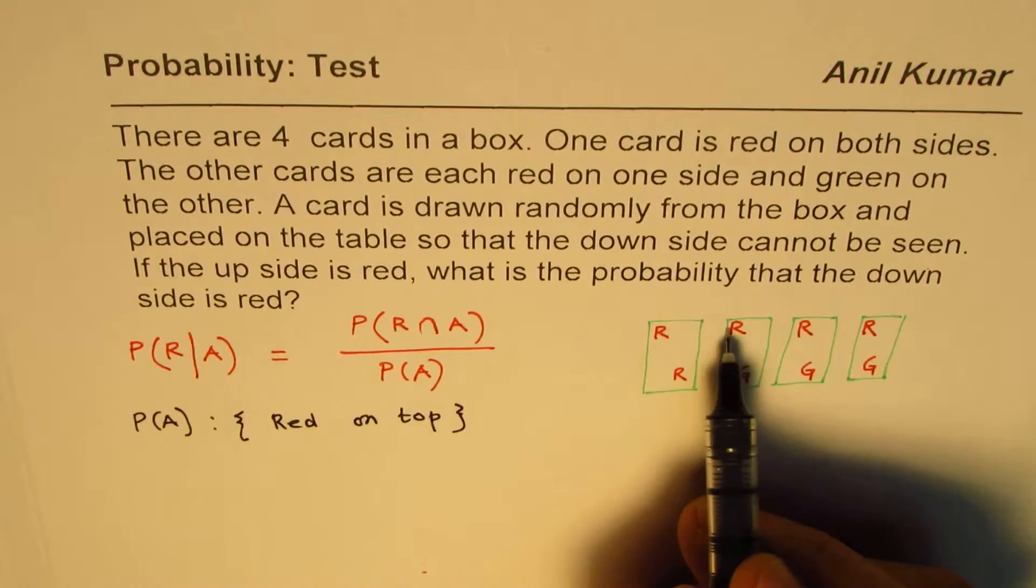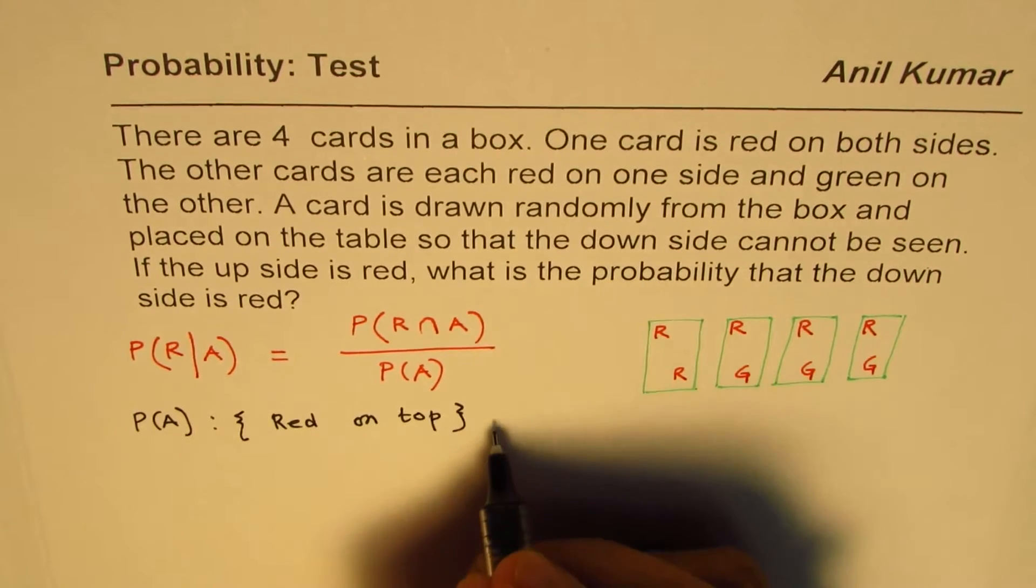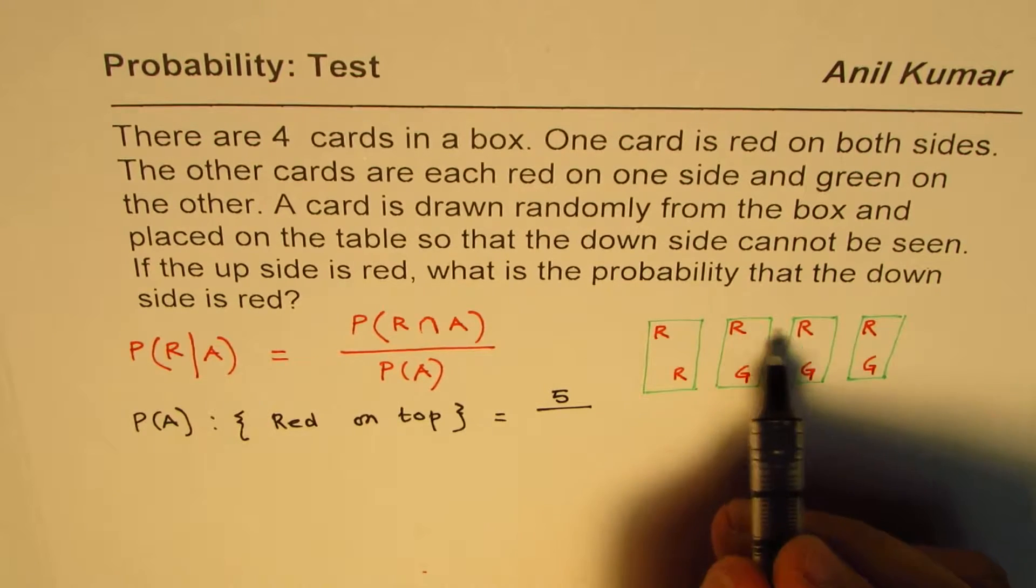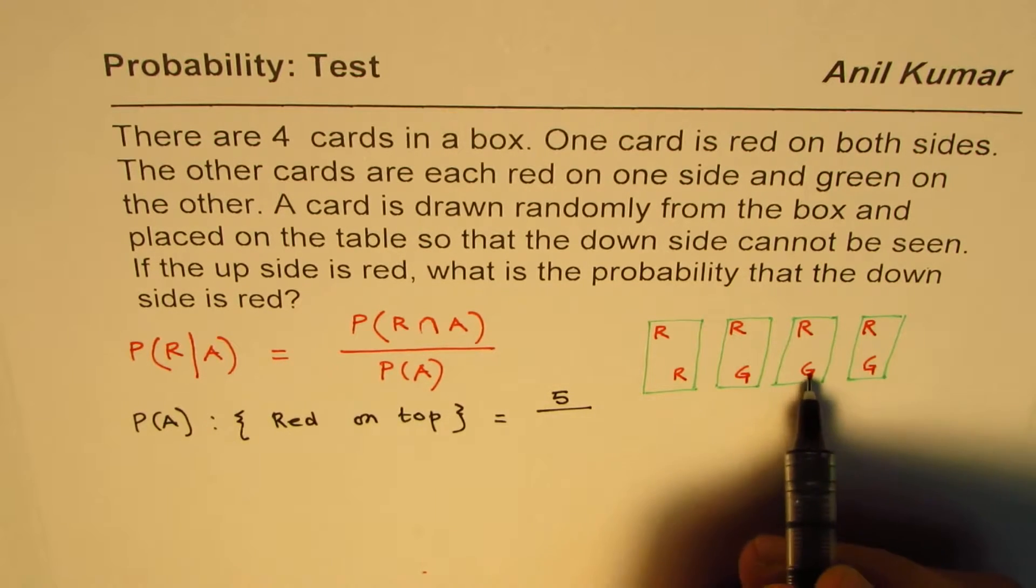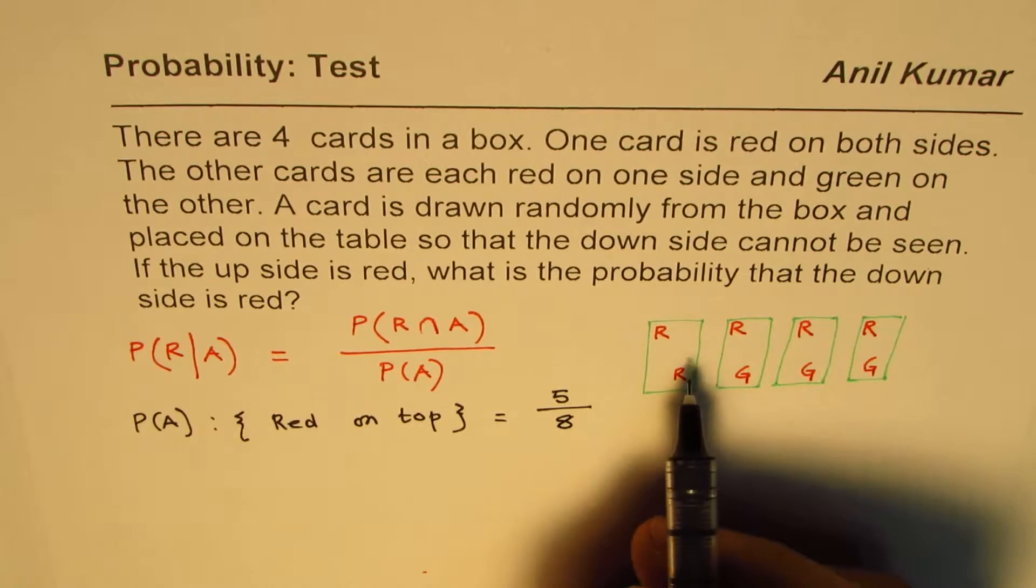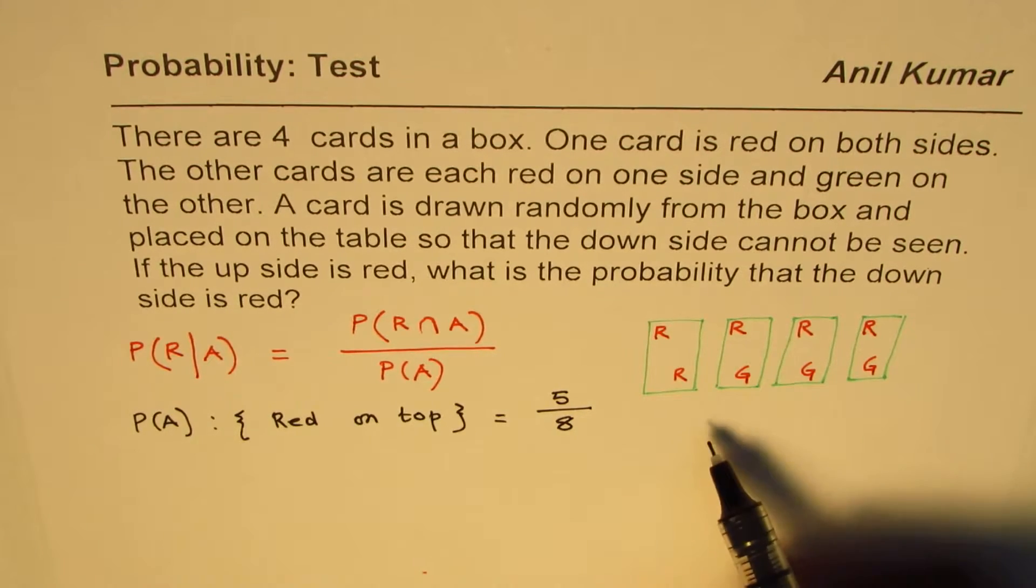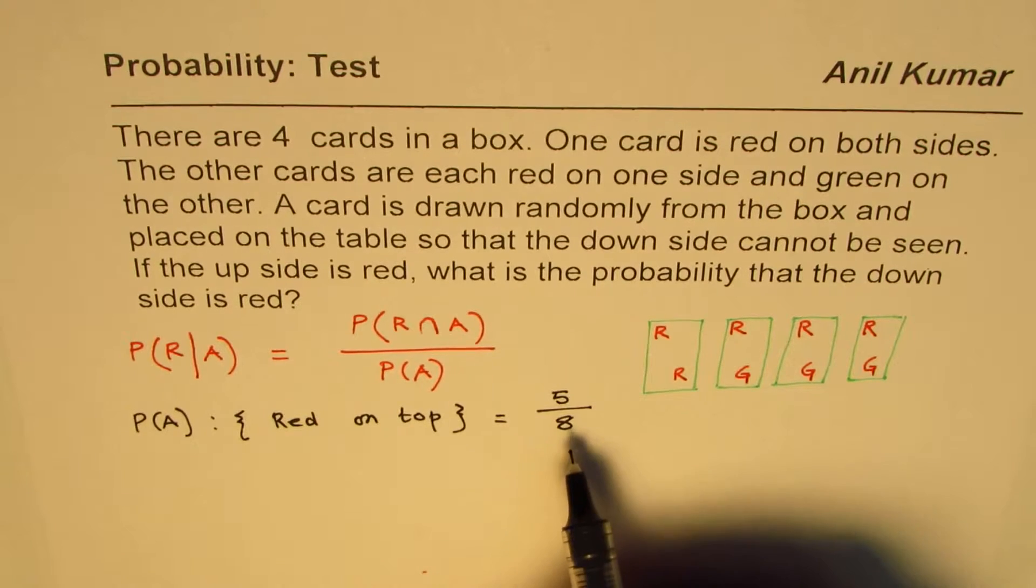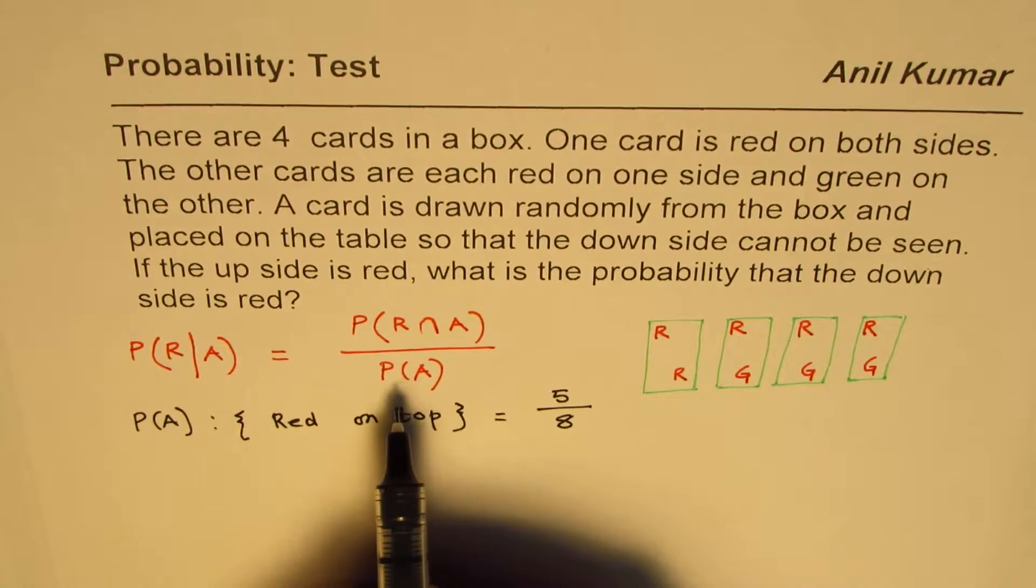So in this particular case, we have one, two, three, four, five reds. Five reds out of one, two, three, four, five, six, seven, eight. So the probability of drawing the first card, placing it on the table with red top is five out of eight. So that will go into the denominator.